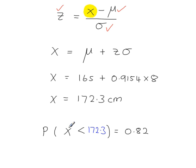For a randomly selected student to have a height less than 172.3 centimetres, the probability of that occurring is 0.82, or 82%.